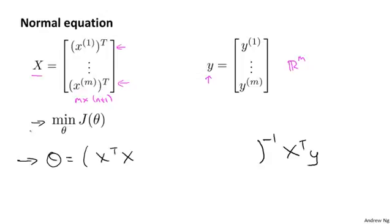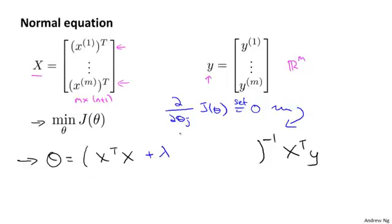This value for theta minimizes the cost function j of theta when we were not using regularization. Now that we are using regularization, if you were to derive what the minimum is, the way you derive it is you take partial derivatives with respect to each parameter, set this to zero, and then do a bunch of math, and you can then show that it's a formula like this that minimizes the cost function. Concretely, if you are using regularization, then this formula changes as follows.